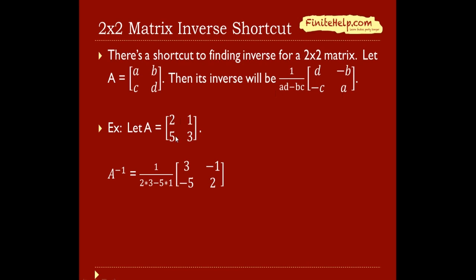Here let A equals 2, 1, 5, 3. So A inverse is going to be 1 over ad, which is 6, minus bc, which is 5. 1 over 6 minus 5 is 1. So this effectively goes away because you're taking 1 times all these numbers.